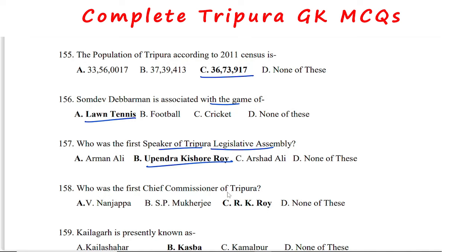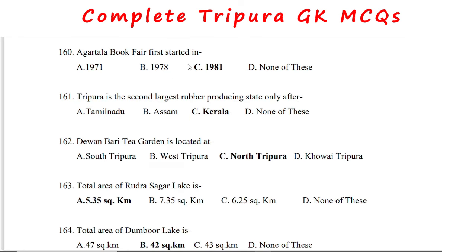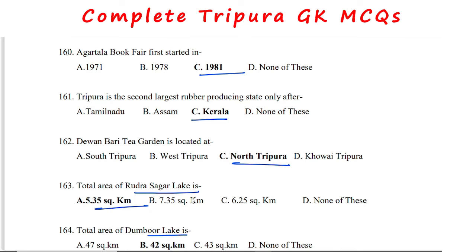The first Chief Commissioner of Tripura was R.K. Roy. Kaligar is presently known as Kasba. Agartala Book Fair started in 1981. Tripura is the second largest rubber-producing state after Kerala. Divanwari tea garden is located in North Tripura. Total area of Rudrasagar Lake is 5.35 square kilometers. Total area of Dumbul Lake is 42 square kilometers.